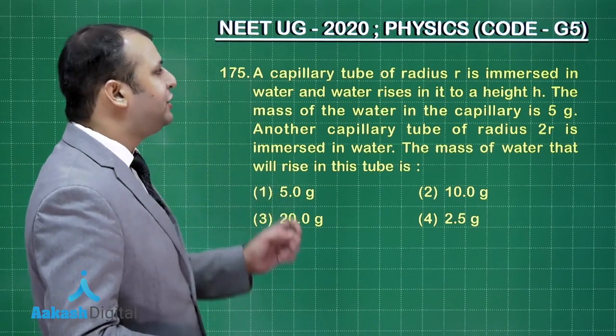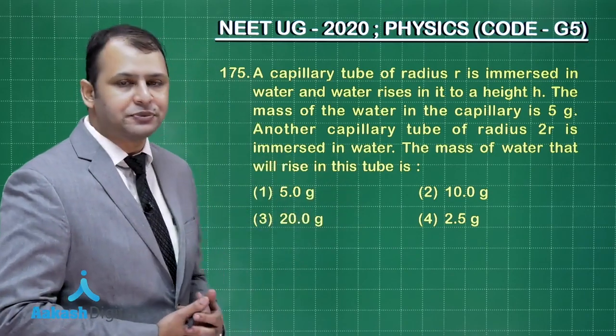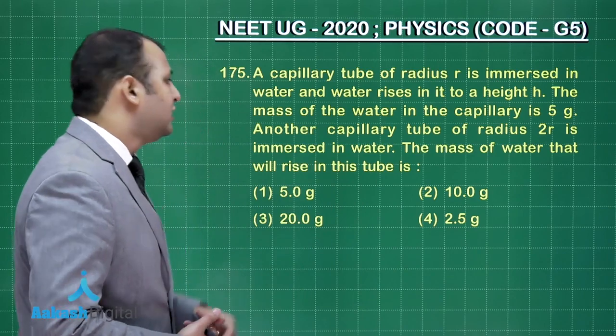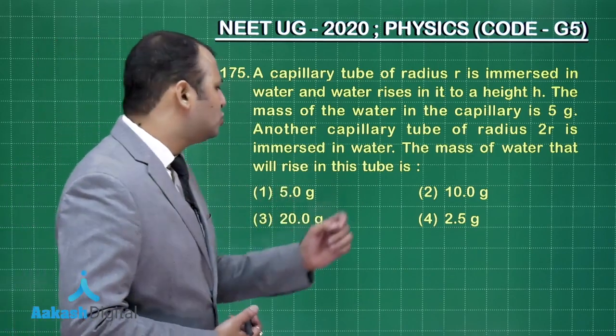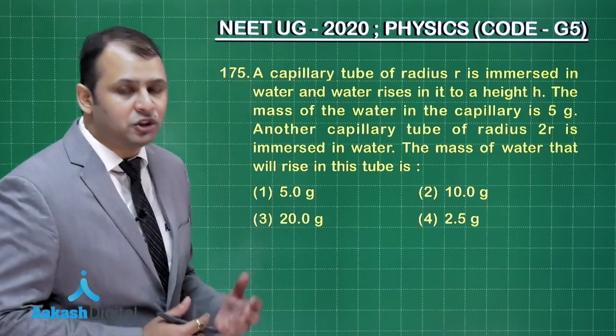As per the question, a capillary tube of radius r is immersed in water and water rises to height h. The mass of the water in the capillary tube is 5 grams. Another capillary tube of radius 2r is immersed in the same water. The mass of the water that will rise in this tube, right?